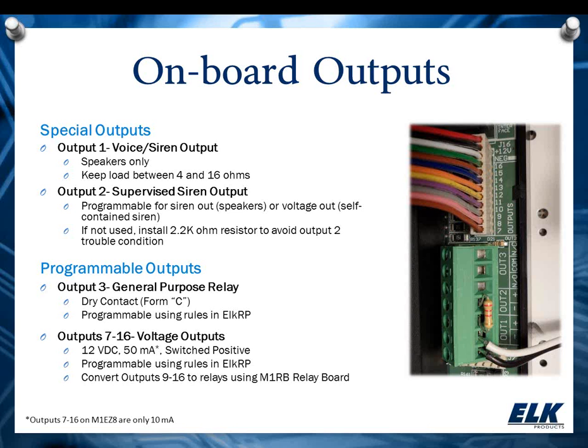Another thing you can do is take the J16 connector and connect it to the M1RB, which is a relay board that converts some of those outputs to relays. Now the M1 Gold and M1EZ-8 have very similar outputs, but one key difference is the EZ-8 voltage outputs on its J16 connector are only 10 milliamps. So that's something to keep in mind — you don't have quite as much current available from those voltage outputs on the EZ-8.